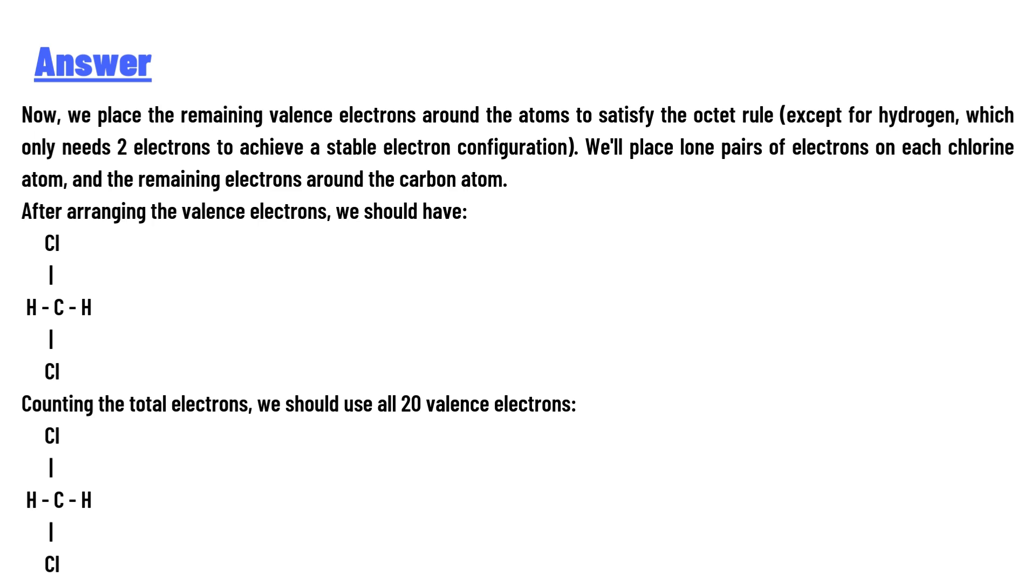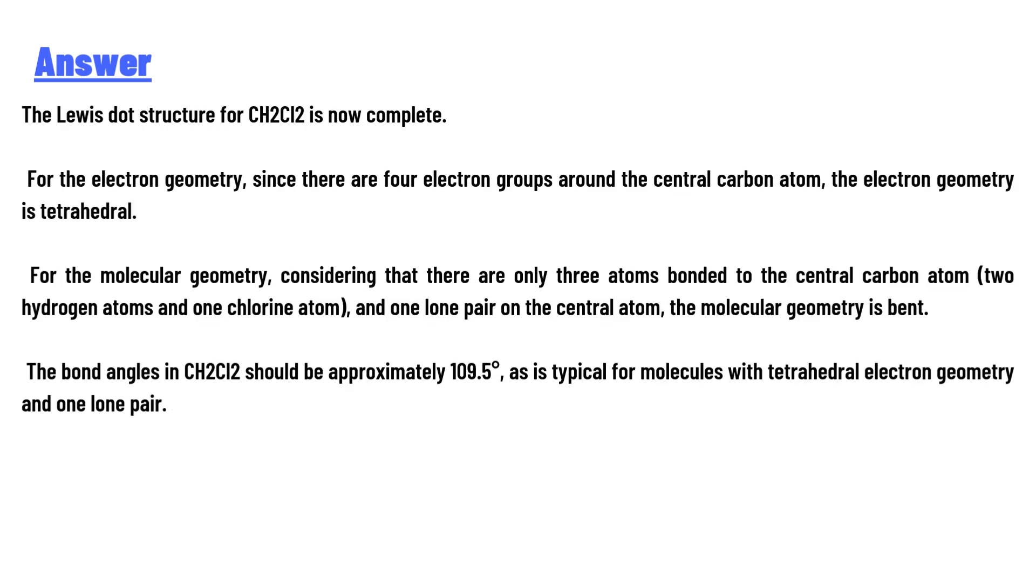After arranging the valence electrons around each atom and counting the total electrons, we should use all 20 valence electrons. The Lewis dot structure for CH2Cl2 is now complete.